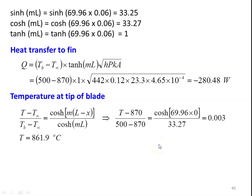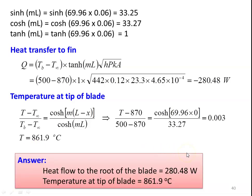For the temperature at the tip of the blade, using (T − T∞)/(Tb − T∞) = cosh[M(L − x)] / cosh(ML). At the tip, x = L, so M(L − x) = 0. Substituting: (T − 870)/(500 − 870) = cosh(0) / cosh(ML) = 1 / 33.27 = 0.003. Rearranging, the temperature at the tip is 861.79 degree Celsius. Answers: heat flow to the root is 280.48 watts and temperature at the tip is 861.9 degree Celsius.